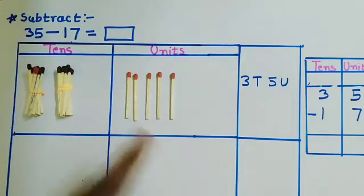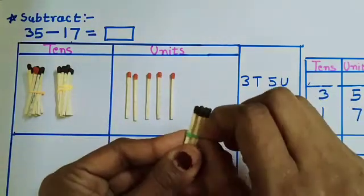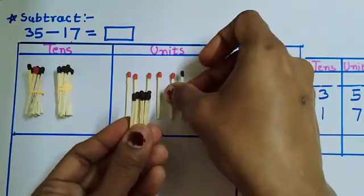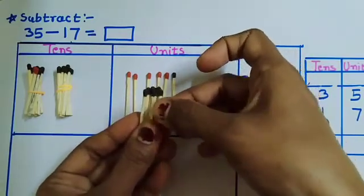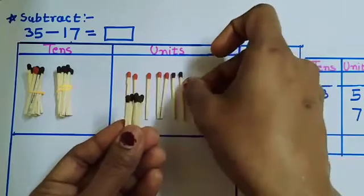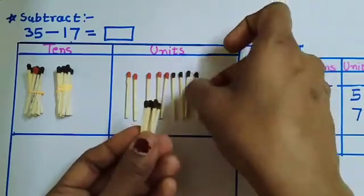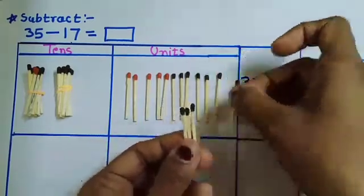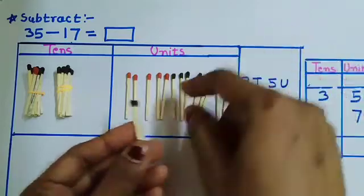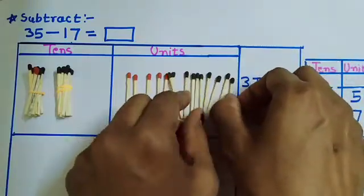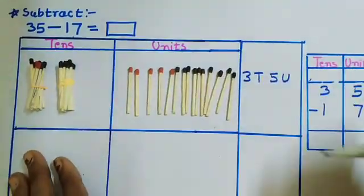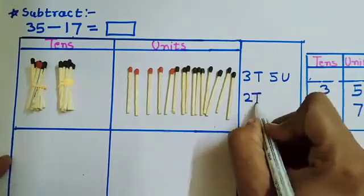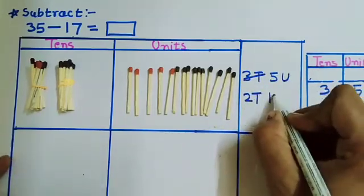It will remain 2 tens. Then I will untie this ten and put it in the unit column. Tell me — how many units do we have now? 10 plus 5 means 15 units. Now it becomes 2 tens and 15 units.